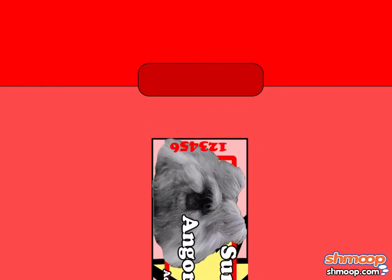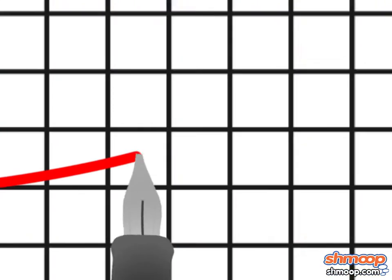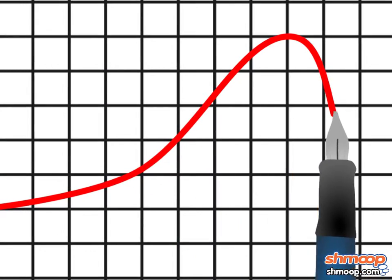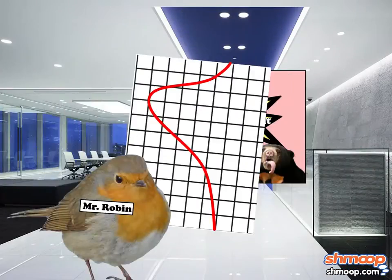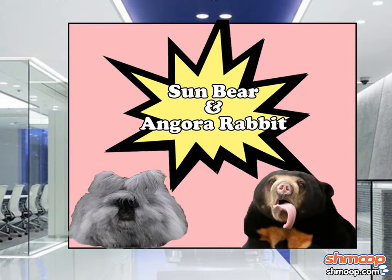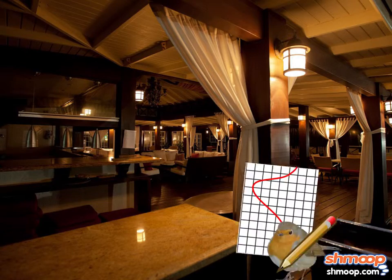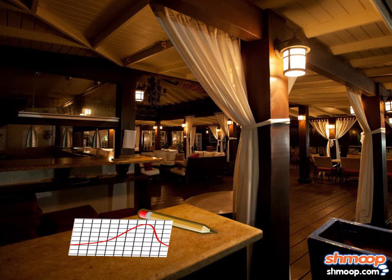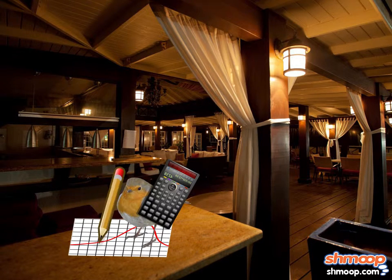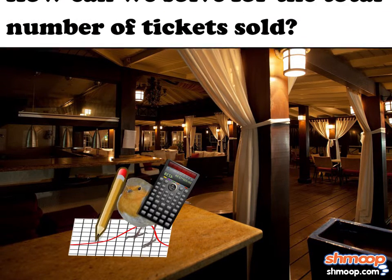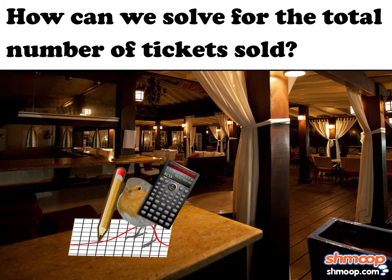The ticket machine comes with a real-time ticket tracker that graphs the number of tickets sold per hour throughout the day. At the end of the day, Mr. Robin, the Sun Bear and Angora Rabbit's best friend, wants to see how popular his friends were by calculating the total number of tickets sold over ten hours. How can we solve for the total number of tickets sold?